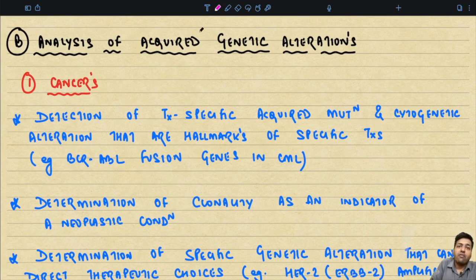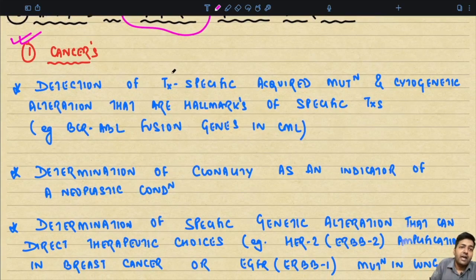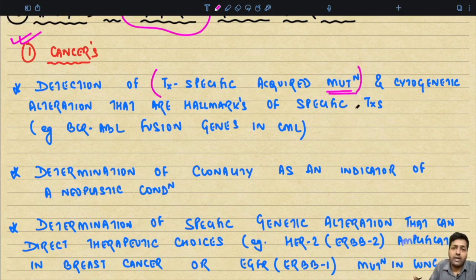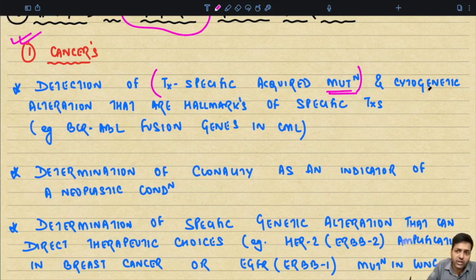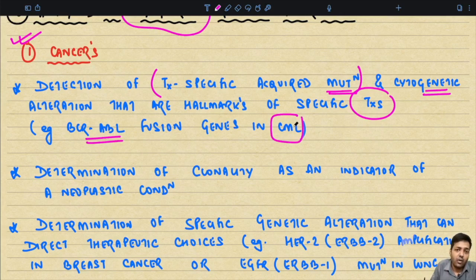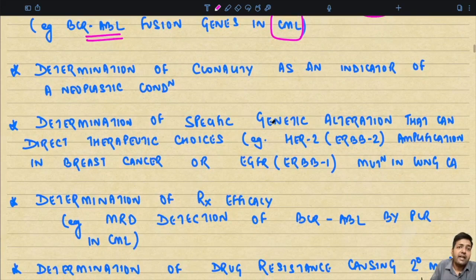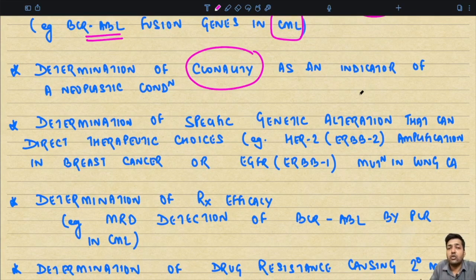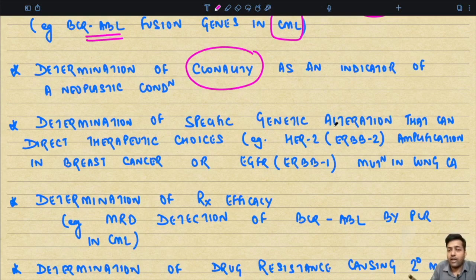These are the indications for analysis of inherited genetic alterations in fetuses, newborns, children, and older patients. For acquired genetic alterations — for example in cancer — molecular analysis is helpful for detection of tumor-specific acquired mutations, such as APC gene mutation in sporadic colorectal carcinoma, and cytogenetic alterations that are hallmarks of specific tumors, for example BCR-ABL fusion gene in CML, or PML-RARA gene in acute promyelocytic leukemia (APML). Clonality determination can also distinguish neoplastic from non-neoplastic conditions.